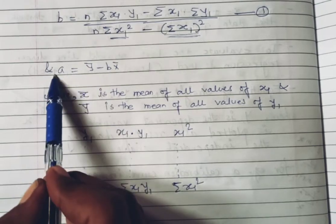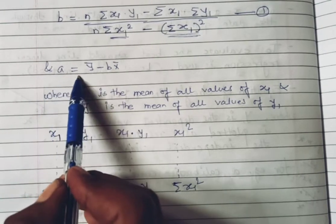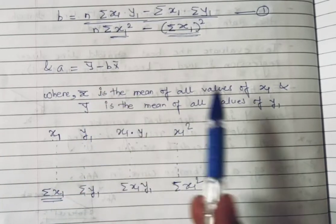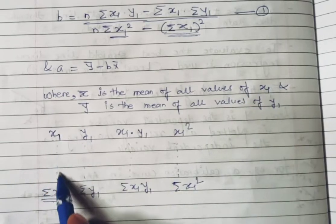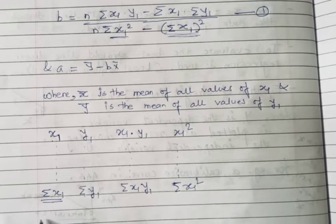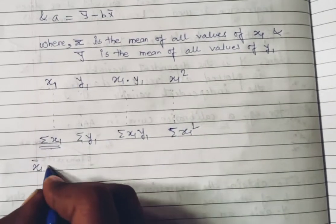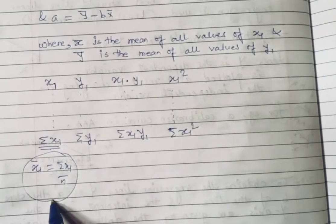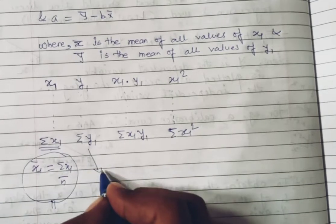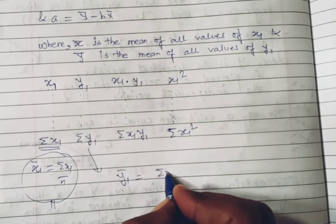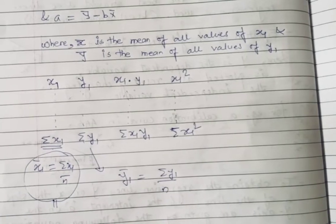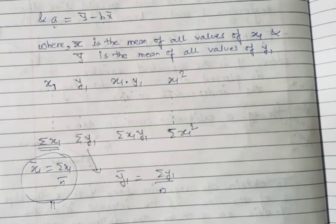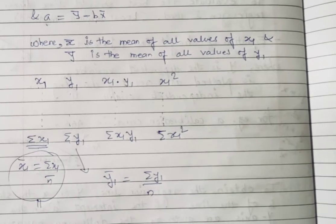The intercept a is given by: a = ȳ − b·x̄, where x̄ and ȳ are the mean values. The mean x̄ = Σx_i / n, and similarly ȳ = Σy_i / n. With the b value already calculated, we can easily find a. This covers the full linear regression method for finding the best straight line y = bx + a.